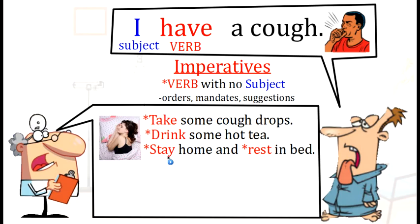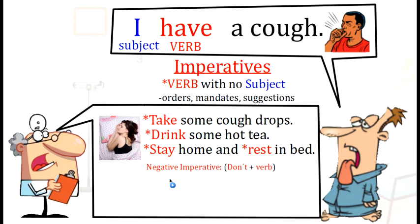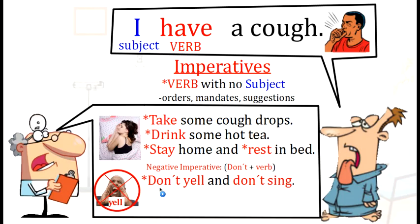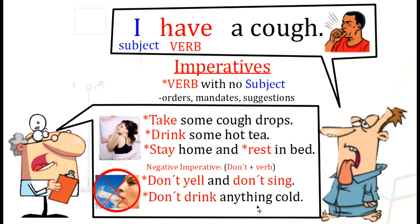Sometimes we give a suggestion or an order and it's a negative imperative. For the negative imperative, we use 'don't' for all types of sentences, followed by the verb. For example, Dr. White says 'Don't yell and don't sing.' When you have a cough, it's important: don't yell and don't sing. Another example of the negative imperative: 'Don't drink anything cold.'